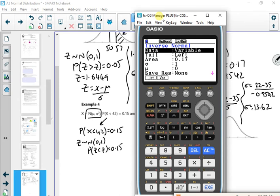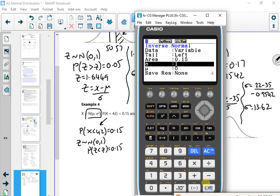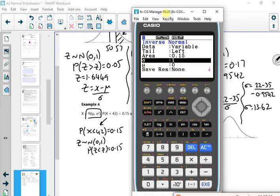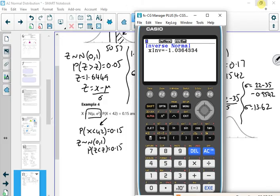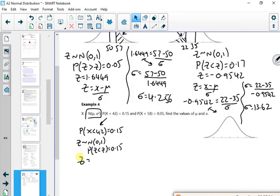It's a left hand tail. The area is 0.15. Work, work, won't work. It's, no, I don't want you to do that. Remember that number, minus 1.036. So it gives me a z value of minus 1.036. Is that right?